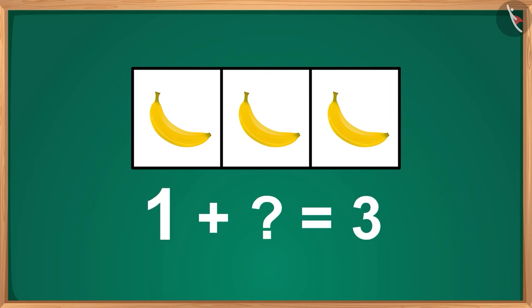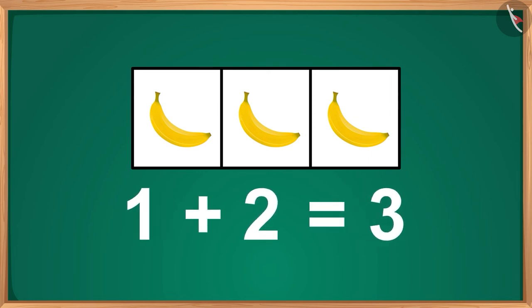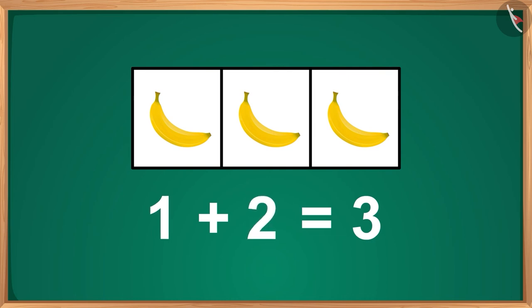If we add one to two, it will be three. We can also write it like this. One plus two is equals to three.